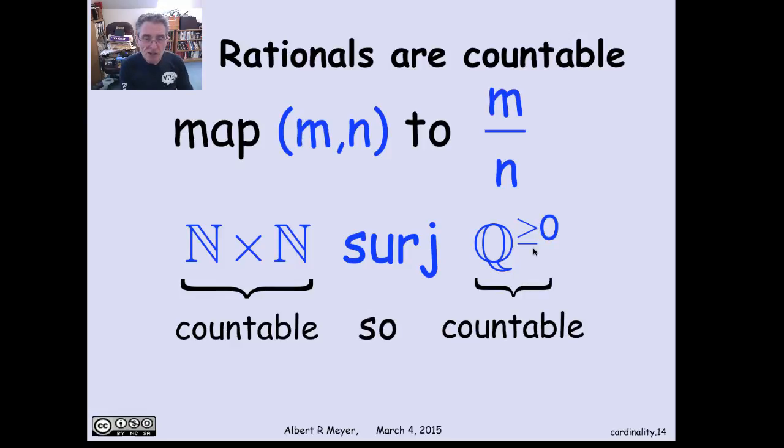We saw that N cross N is countable, and there's a surjection described above to the non-negative rationals, so they're countable.